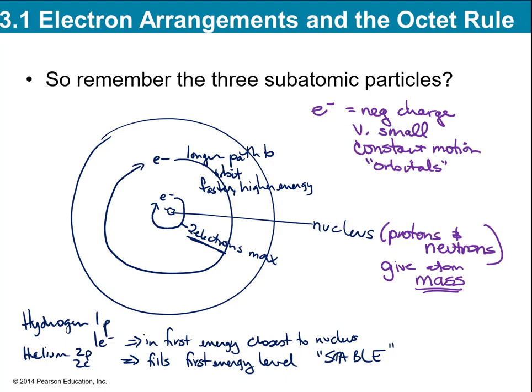Since electrons closer to the nucleus have a shorter path, they can move slower and have lower energy. But electrons further out have to make the same loop in the same period of time. So if the outer electron has a longer distance to cover, it has to actually move faster. So electrons closest to the nucleus have the lowest energy; the further out, the bigger their path and the higher their energy level.